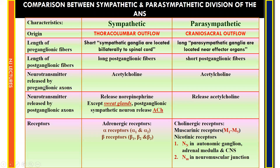The neurotransmitter released by the preganglionic axon is the same in both sympathetic and parasympathetic — acetylcholine. However, the postganglionic axon differs: in sympathetic it releases norepinephrine (noradrenaline), except the sweat glands which release acetylcholine. In parasympathetic, the postganglionic axon also releases acetylcholine. So in sympathetic, preganglionic releases acetylcholine and postganglionic releases norepinephrine.